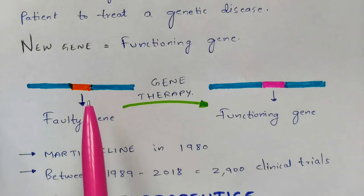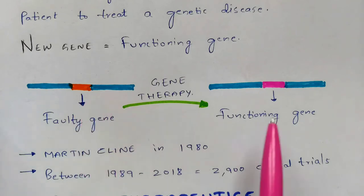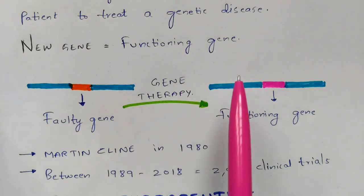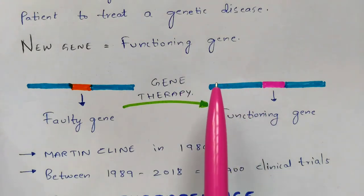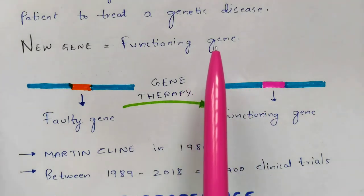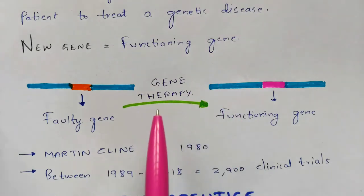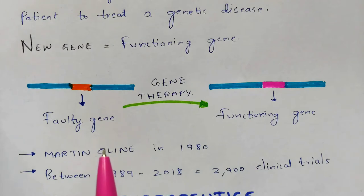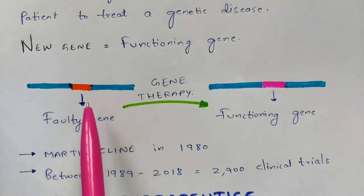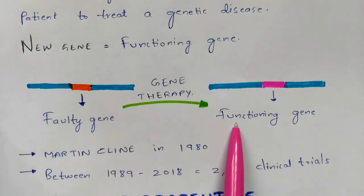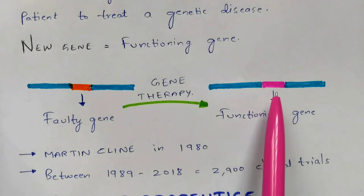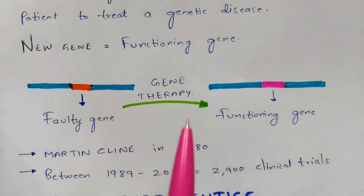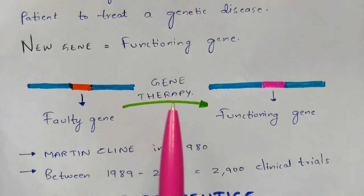Once you remove the faulty gene and replace it with a functioning gene, the patient will no longer suffer from that genetic disorder because he is completely cured by the process of gene therapy. The faulty gene is removed and the functioning gene is inserted in the place of the nucleotide. This process is called gene therapy.